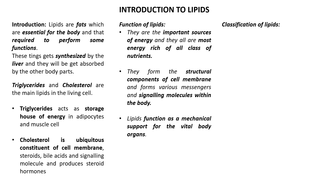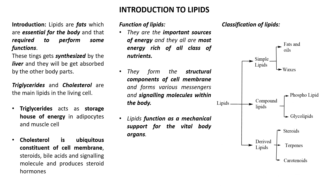Lipids are classified into three types: simple lipids, compound lipids, and derived lipids. Simple lipids are further classified into fats and oils — examples include triglycerides and diglycerides — and waxes, such as beeswax and carnauba wax. Compound lipids include phospholipids, such as cephalins, and glycolipids, such as cerebrosides.